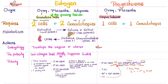To make estrogen, you need two cells in the ovary and two gonadotropins from the pituitary. The two cells are the theca cells, which make androgen first, and then that androgen is converted to estrogen by the aromatase enzyme in the granulosa cell. Estrogen synthesis requires both FSH and LH — LH stimulates the theca cell, FSH stimulates the granulosa cell. But to make progesterone, you need only one cell — the granulosa cell of the corpus luteum — and only one gonadotropin: LH.